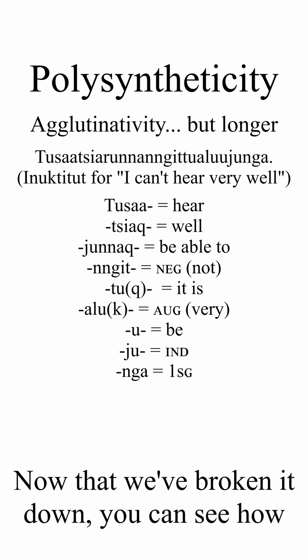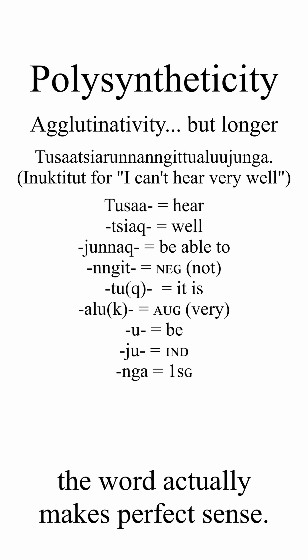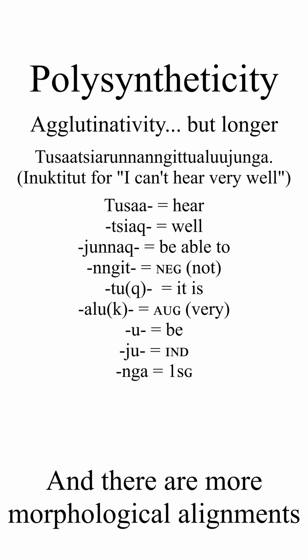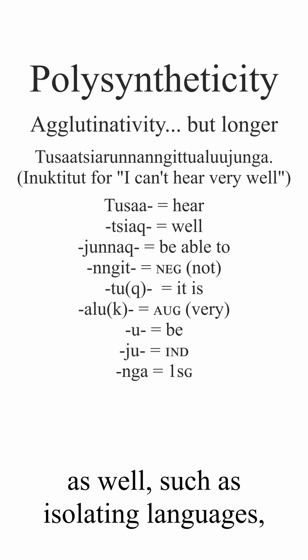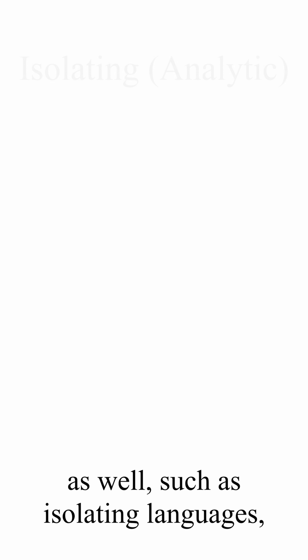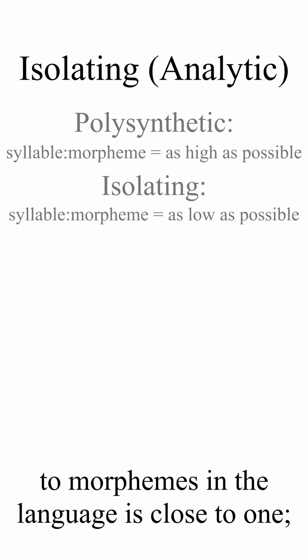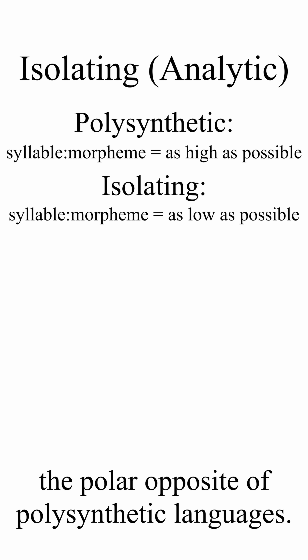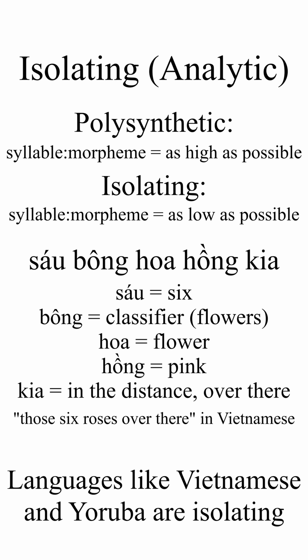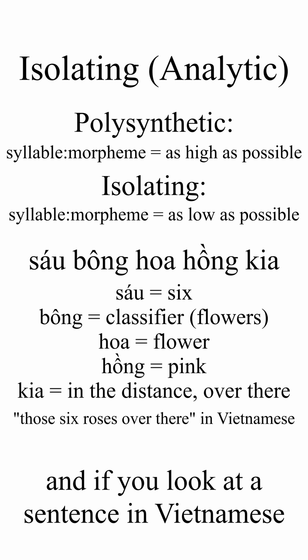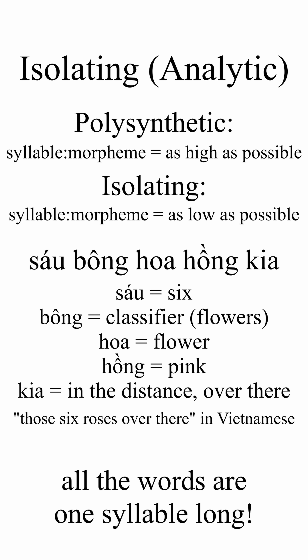Now that we've broken it down, you can see how the word actually makes perfect sense. And there are more morphological alignments as well, such as isolating languages, which is when the ratio of words to morphemes in the language is close to one — the polar opposite of polysynthetic languages. Languages like Vietnamese and Yoruba are isolating or close to isolating, and if you look at a sentence in Vietnamese, all the words are one syllable long. And now you know.